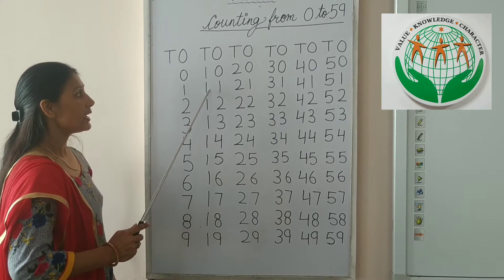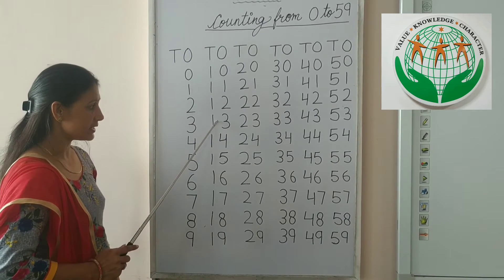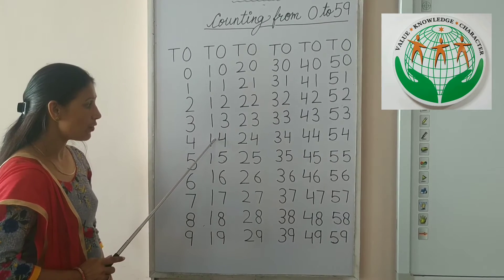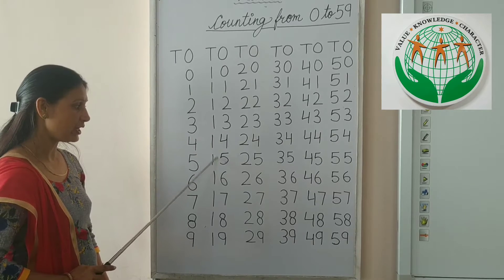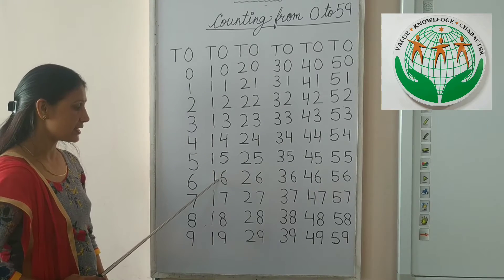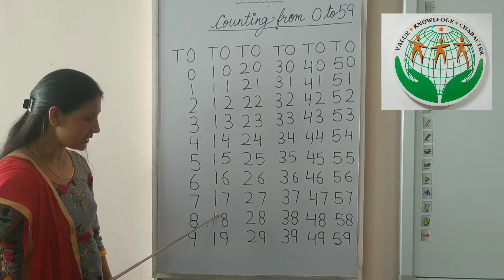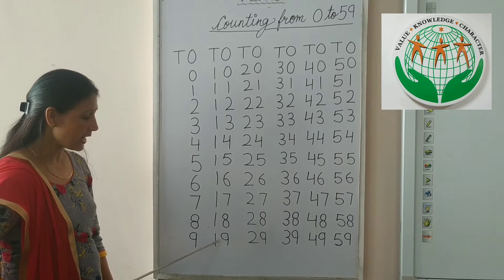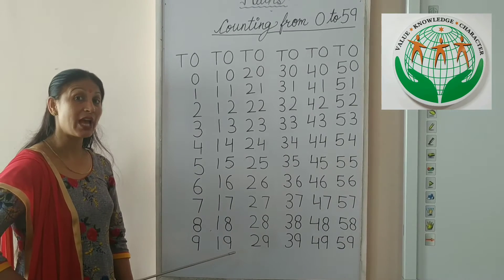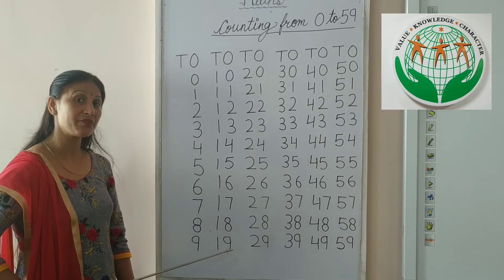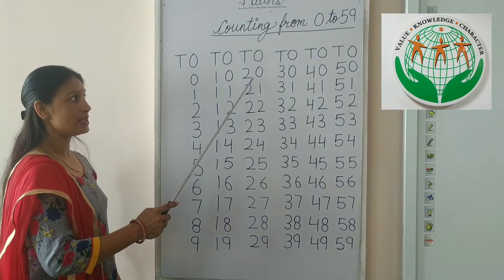10, 11, 12, 13, 14, 15, 16, 17, 18, 19. And kids, what comes after 19? Yes, 20.